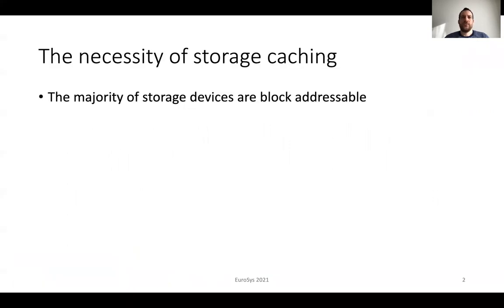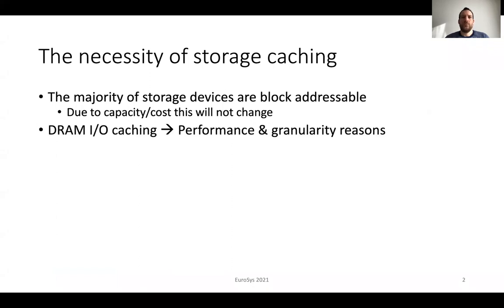Today, the majority of storage devices are block addressable. These include traditional hard disk drives, but also fast storage devices like flash. This will not change anytime soon due to capacity and cost reasons. Block addressable storage devices require IO caching over DRAM for several reasons, including performance, because DRAM is much faster compared to persistent storage, and also granularity, as applications tend to access data at word rather than block granularity.